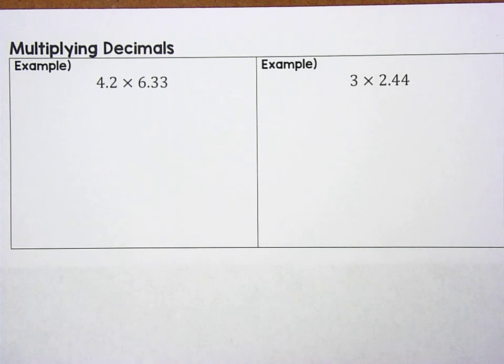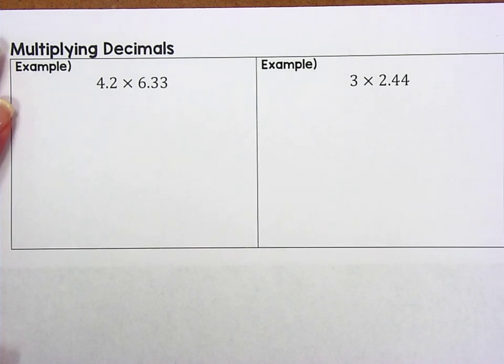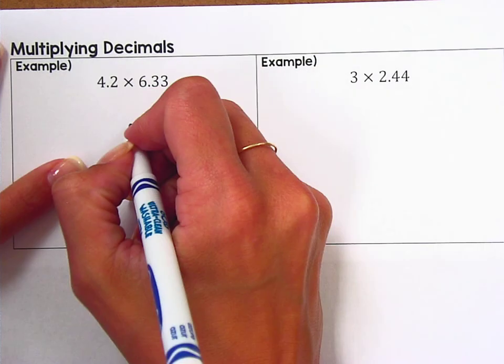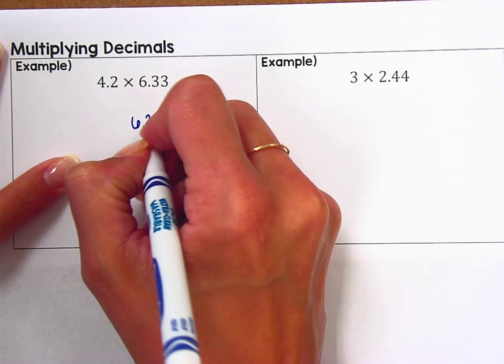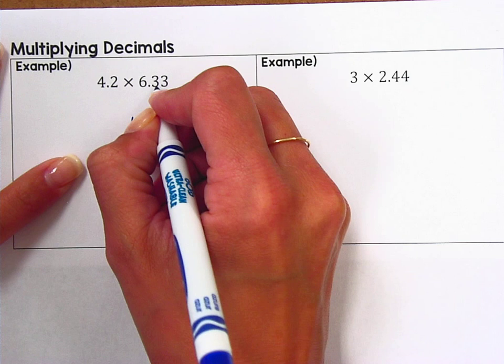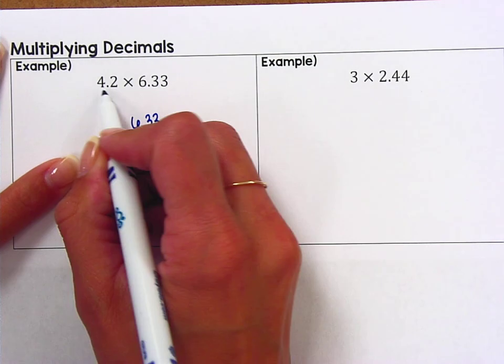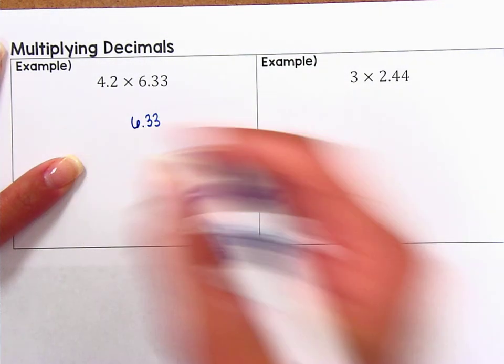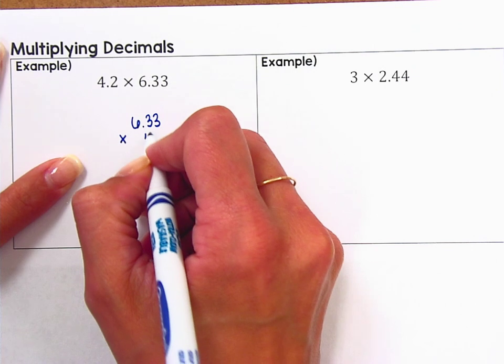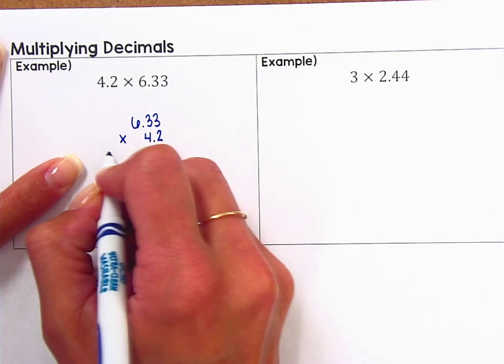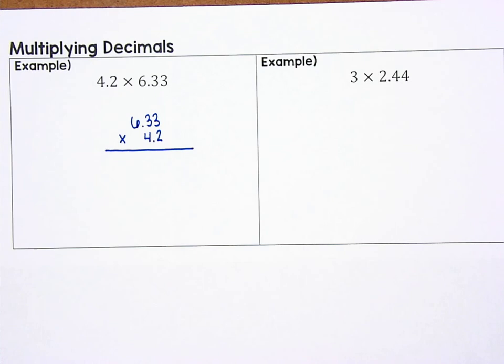I personally like to take the number with the most digits and put that first and then the number with the least amount of digits. So in our first example, 4.2 times 6.33, I'm going to start with 6.33 because there are more digits. There's one, two, three digits in that versus this one which only has two. And we're going to multiply by 4.2. And again, we don't need to worry about lining up those decimal points so I can simply line up my digits.